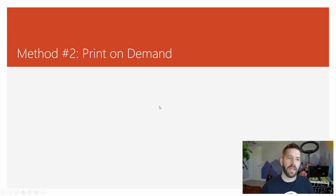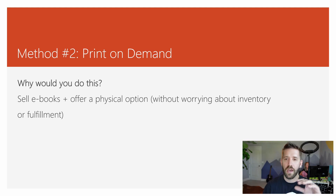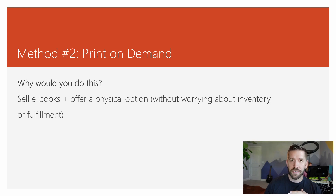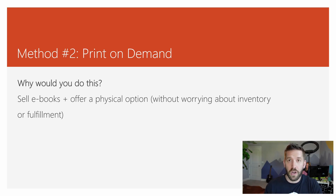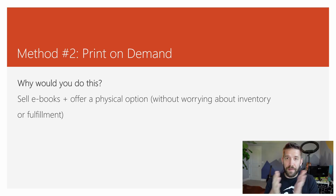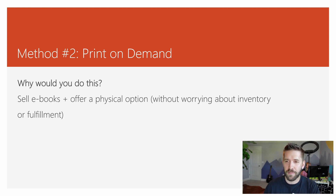Method number two is print-on-demand. If you are selling books — like free-plus-shipping type of book offers — this is a really awesome option. For example, you could sell an e-book for $5, but then also ship them a physical copy if they check a checkbox on the checkout form, doing a digital plus physical product all in the same checkout. What's also great about print-on-demand is you don't have to worry about inventory management — they get an order, they print it, they ship it. It keeps your garage clear of all the boxes.